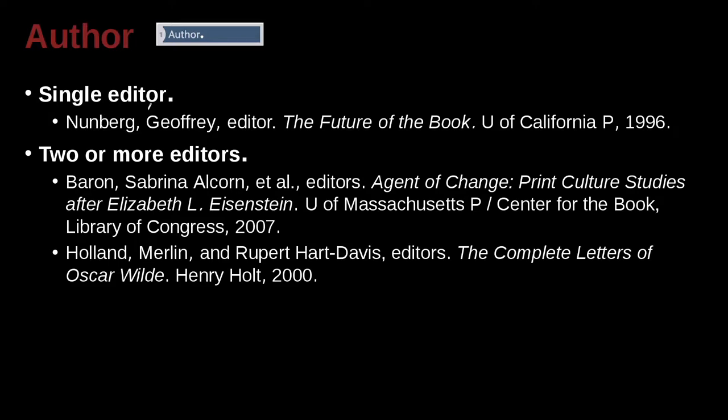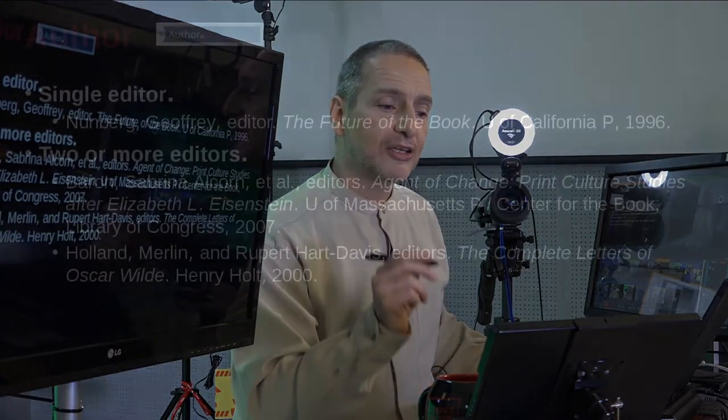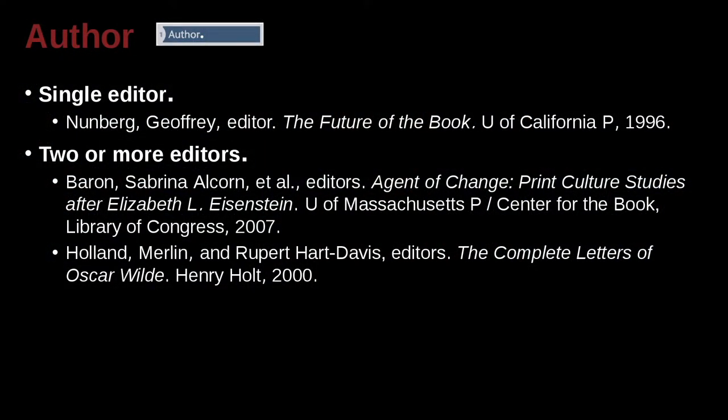We've already kind of looked at the single author. In this case, we have Nuenberg Jeffrey — surname, first name — followed by a comma, then editor. This is a book that has an editor, meaning it's not just one book by one author, but rather a book with chapters written by different people. We may or may not know who those people are, but we do know the editor in this case is Nuenberg Jeffrey, editor.